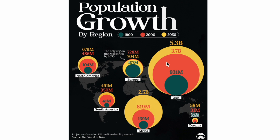Moving on to South America: in 1900 they had 41 million people, in 2000 it was 350 million, and the projection by 2050 is 491 million. Africa in 1900 had 131 million people, in 2000 had 819 million, and is projected to have 2.5 billion people by 2050.